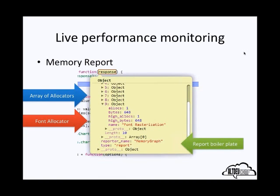Along the bottom there's some boilerplate stuff, which I'll get into later on in the talk. Here's a screenshot of the live memory usage graph. Along the bottom you can see the legend for the different lines on the graph, each indicating a different allocator being tracked.